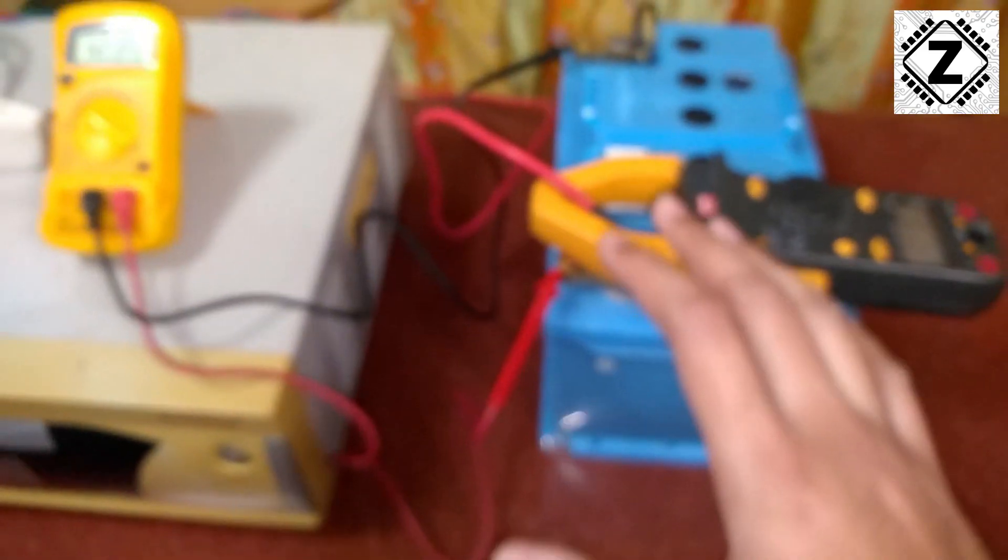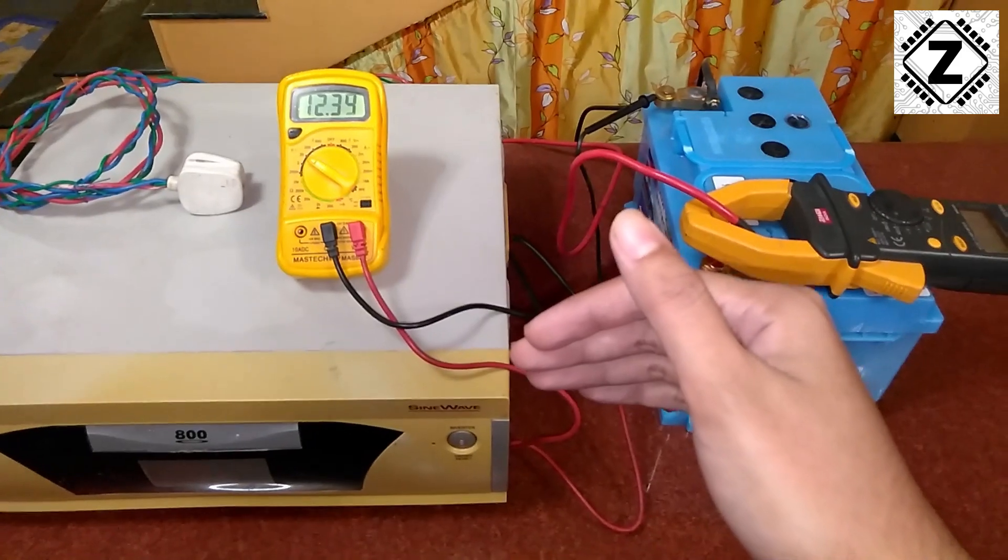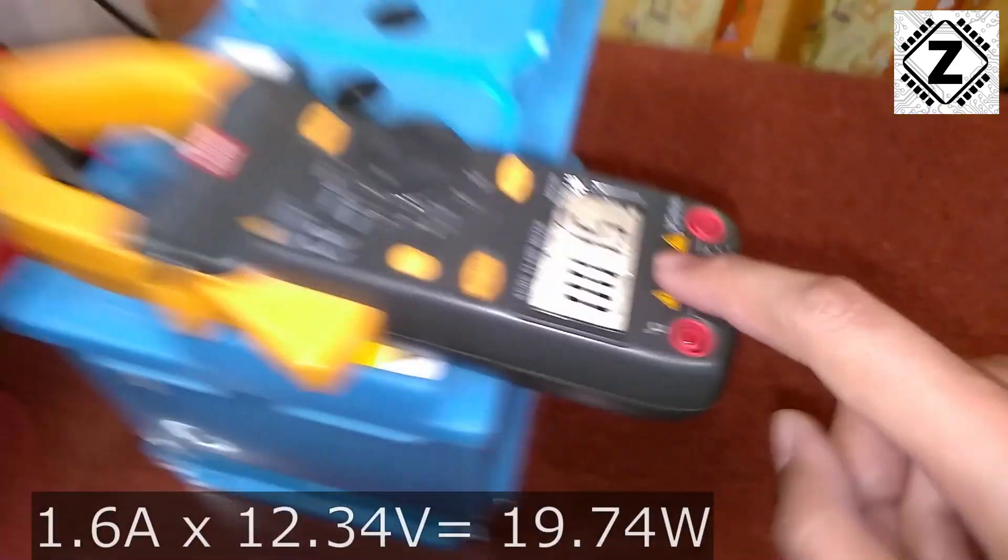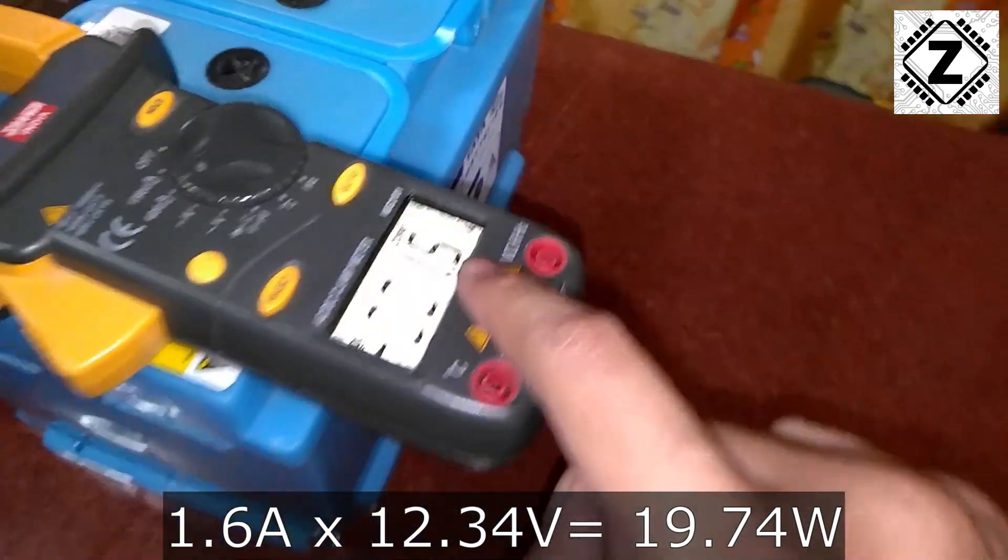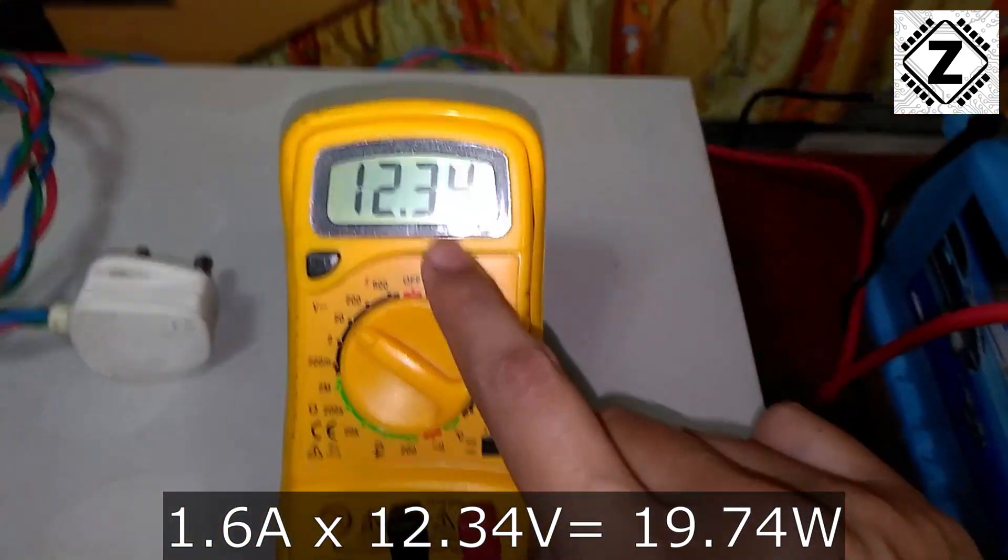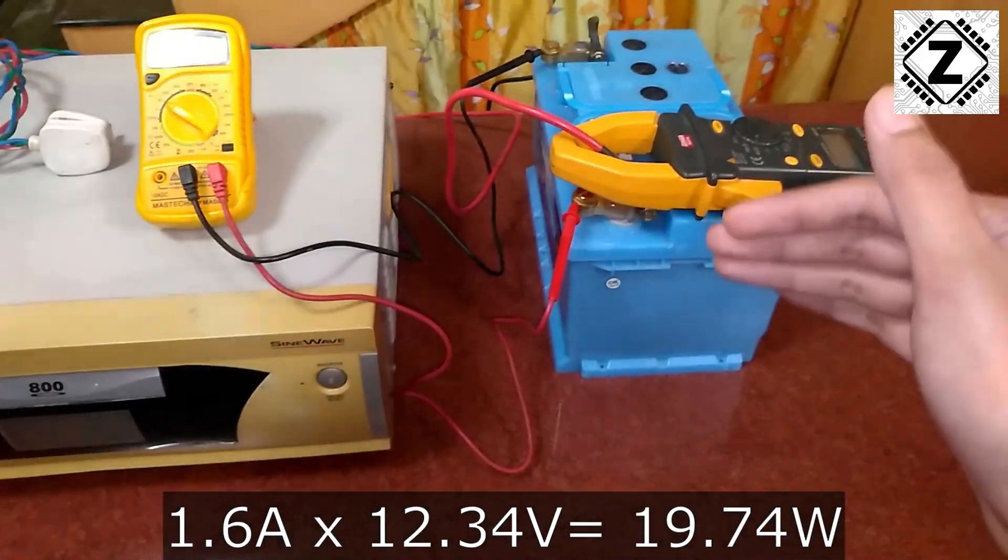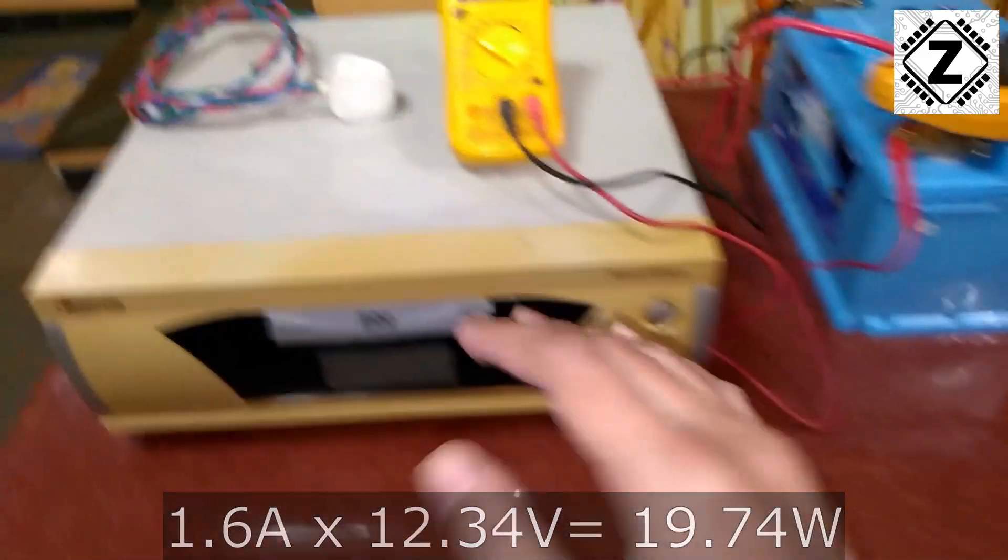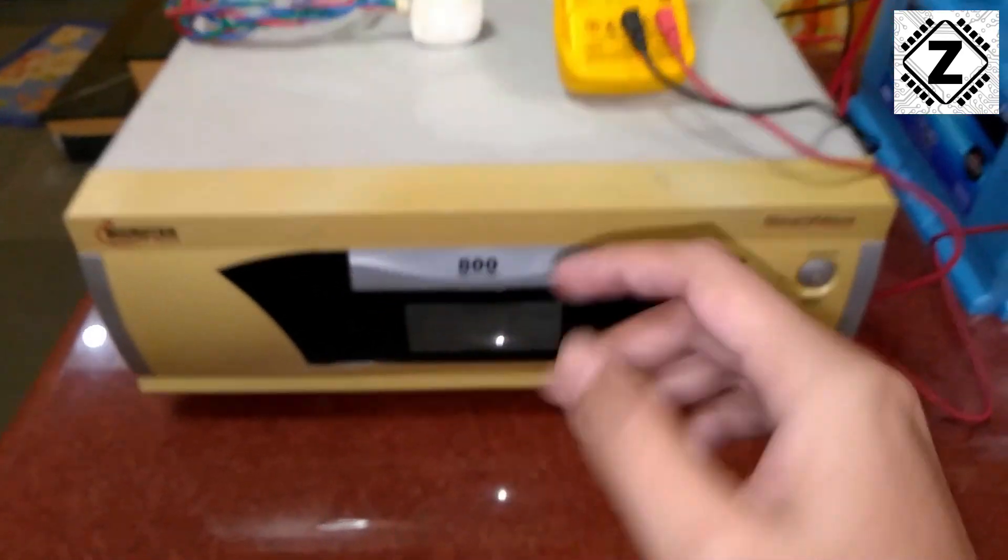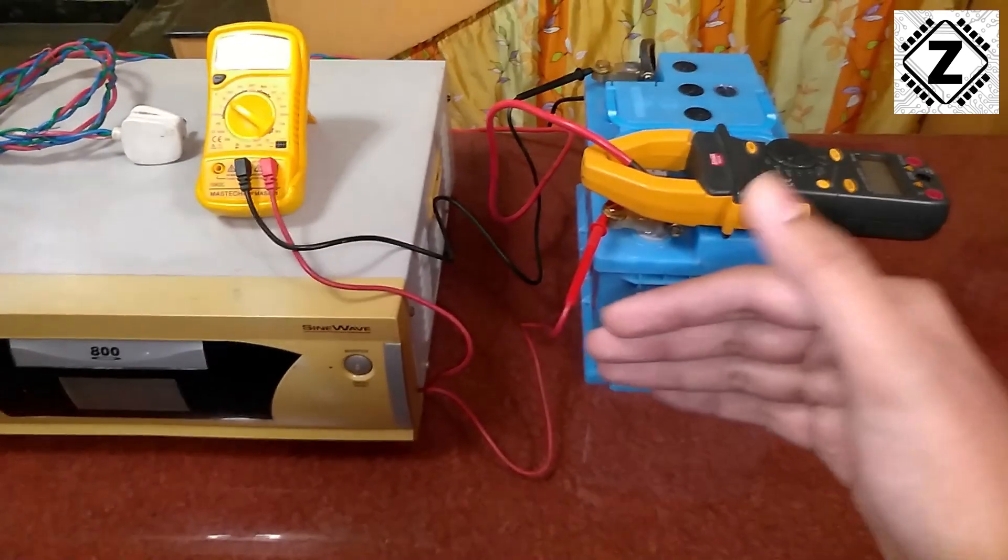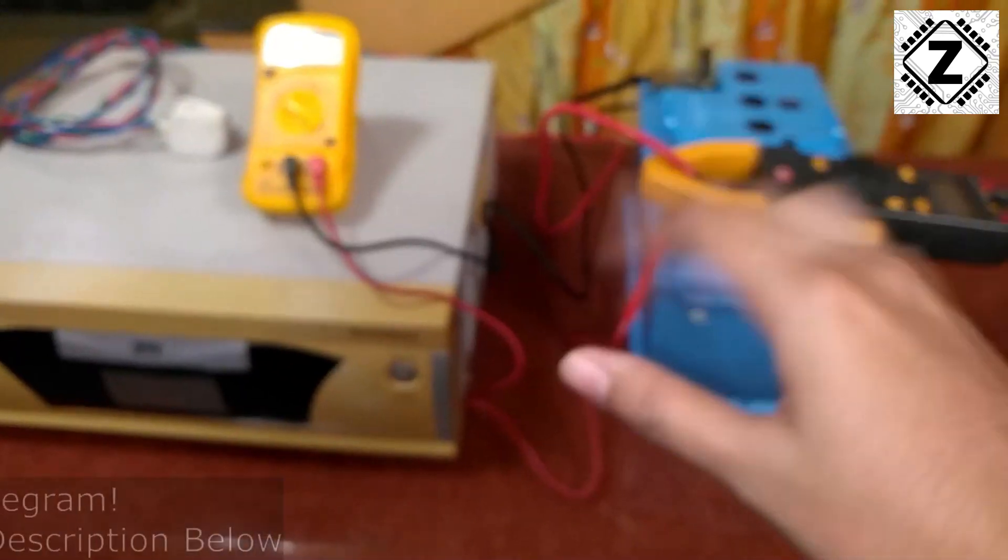So this is the kind of consumption which will happen in the absence of any kind of load. And if I multiply these figures - 1.6 amps, 1.5 or 1.6 amps multiplied by 12.34 volts - the answer will be somewhere between 18 to 20 watts. So we can say that nominal 12 volt inverters which are in the 800VA range will consume somewhere from 18 to 20 watts just to keep themselves running.